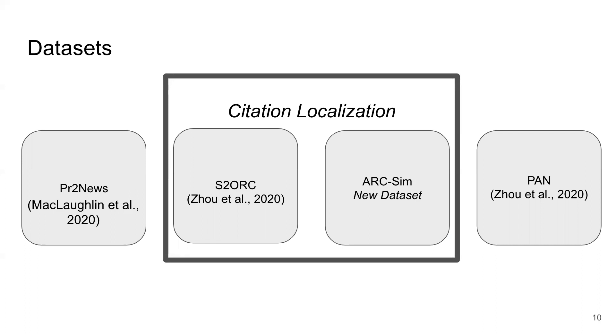These datasets are created by iterating through papers in a large corpus of scientific articles, finding sections in those papers that contain citations to another paper in the corpus, and then pairing together the abstract of the cited paper with the section in the citing paper that contains the citation. Negative examples can simply be created by sampling a cited abstract or a citing section where there's actually no citation relationship.